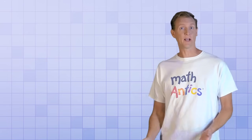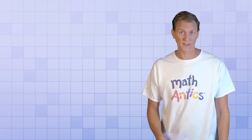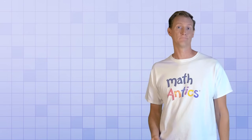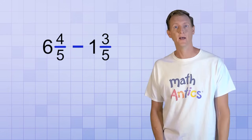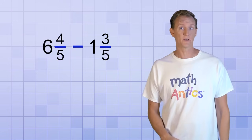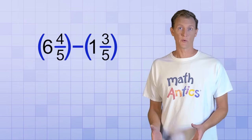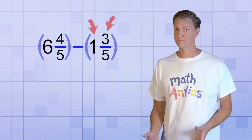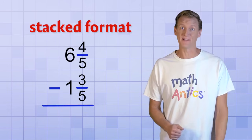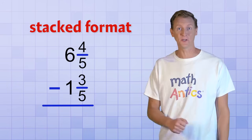So as you can see, subtracting mixed numbers can be a little complicated. But not all problems are that hard. Some are pretty easy, like this one, 6 and 4 fifths minus 1 and 3 fifths. We still need to remember that the mixed numbers form groups, so we have to subtract both parts. But that's where the stacked format that we learned about in the last video can really help us out.